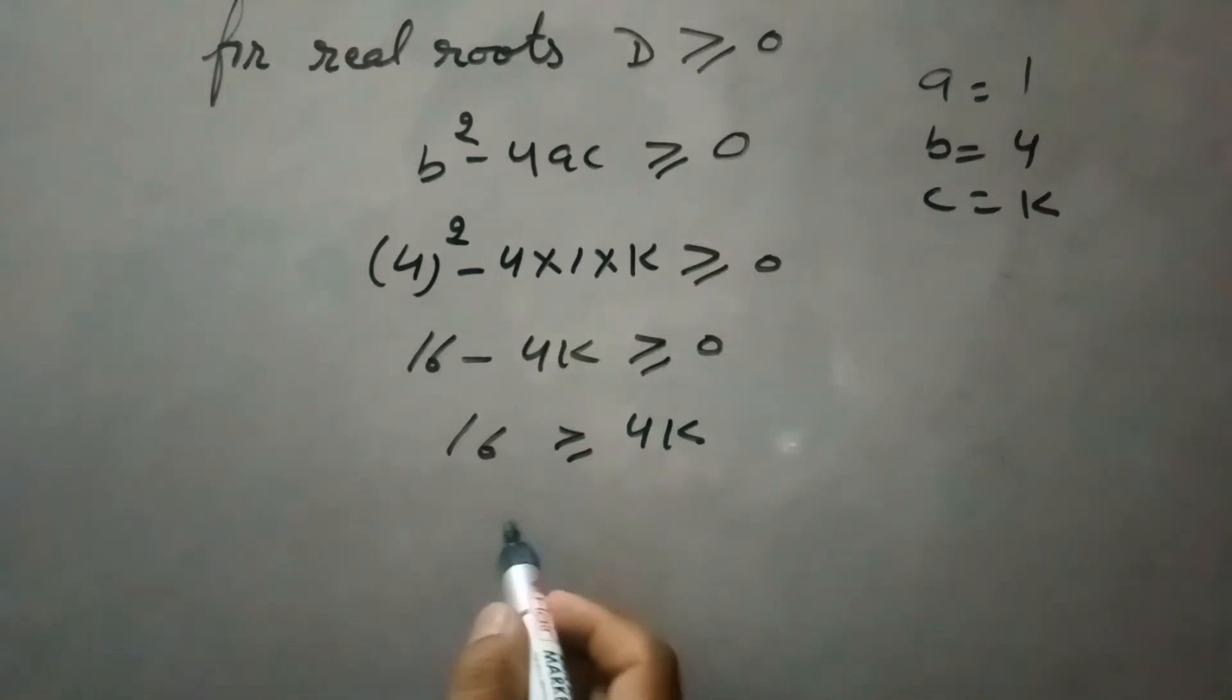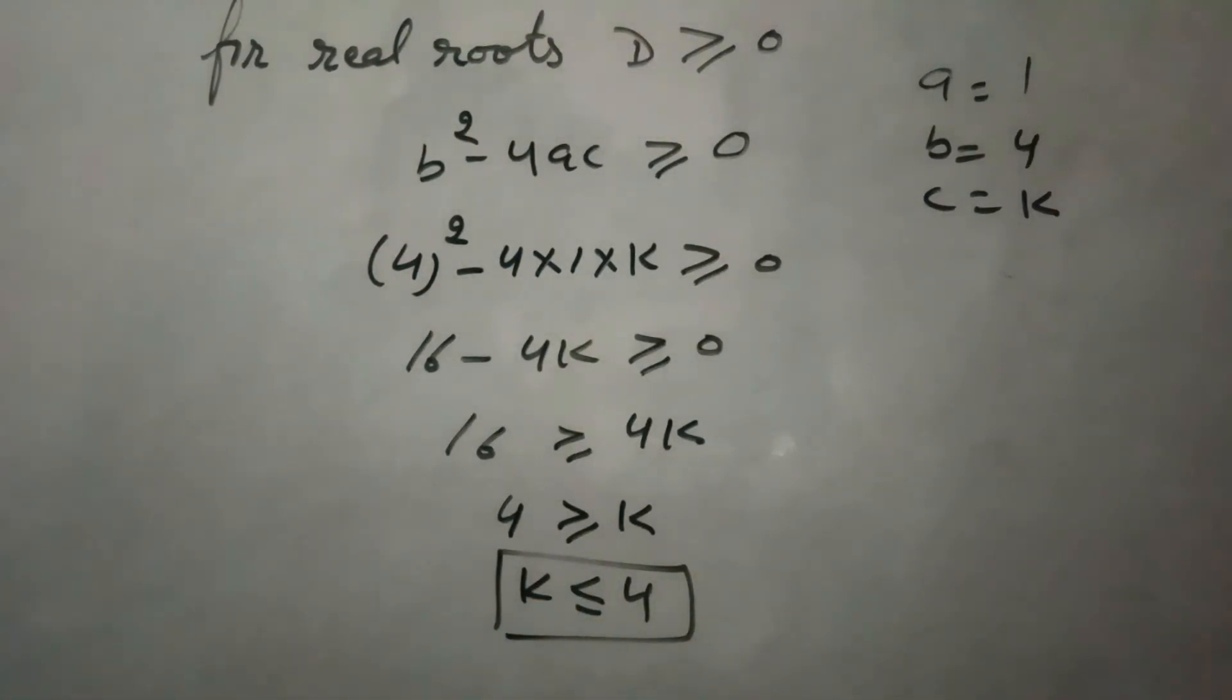Dividing both sides by 4, we get 4 ≥ k, or k ≤ 4. Therefore, k should be less than or equal to 4 for this equation to have real roots.